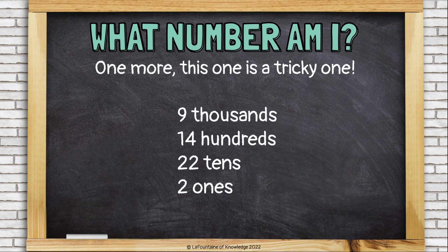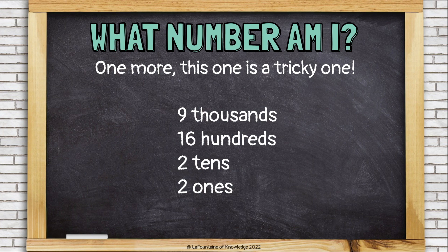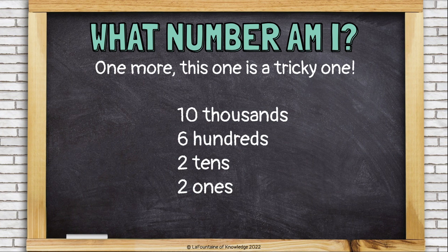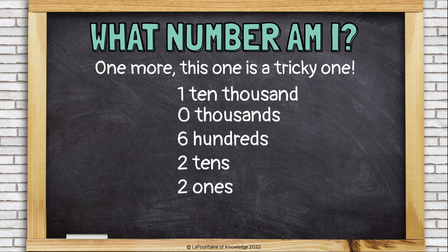Here's one more — this is a tricky one. Let's start in the ones place; the ones look good. Let's move to the tens place: I have 22 tens. 20 of those tens are really just 2 more hundreds. So now I have 16 hundreds and just 2 tens. Let's regroup 10 hundreds up into the thousands place — now I have 10 thousands and just 6 hundreds. But 10 thousands is actually a group of 10,000. Now I can see my number: 10,622.